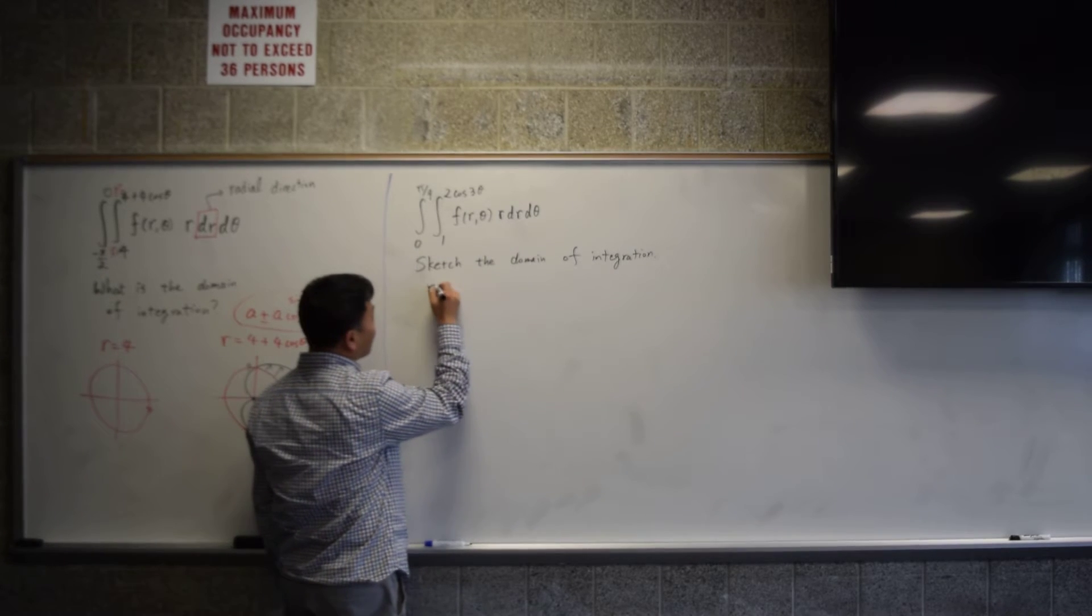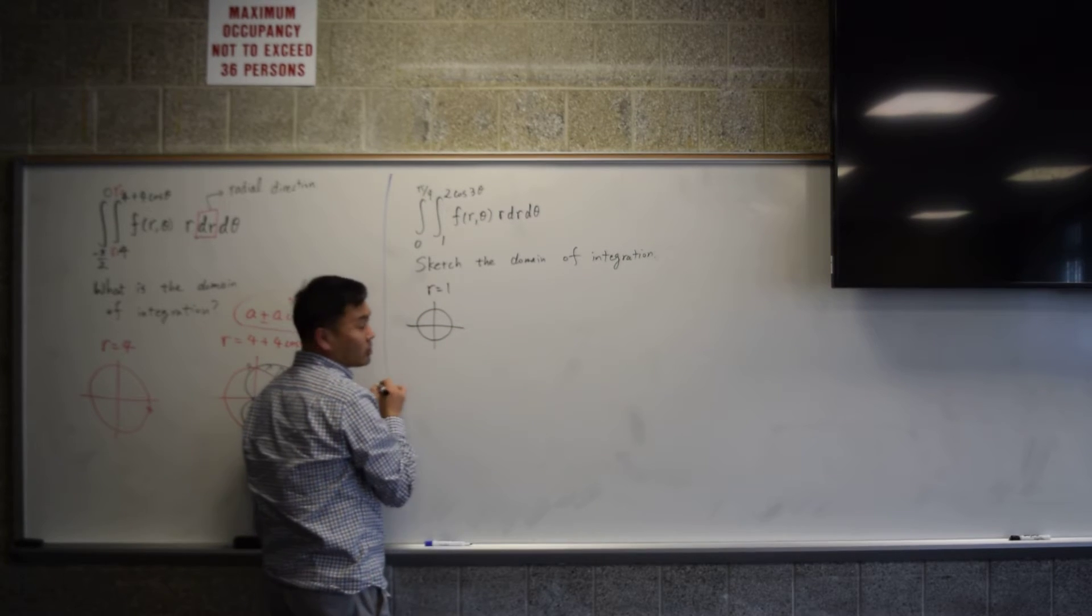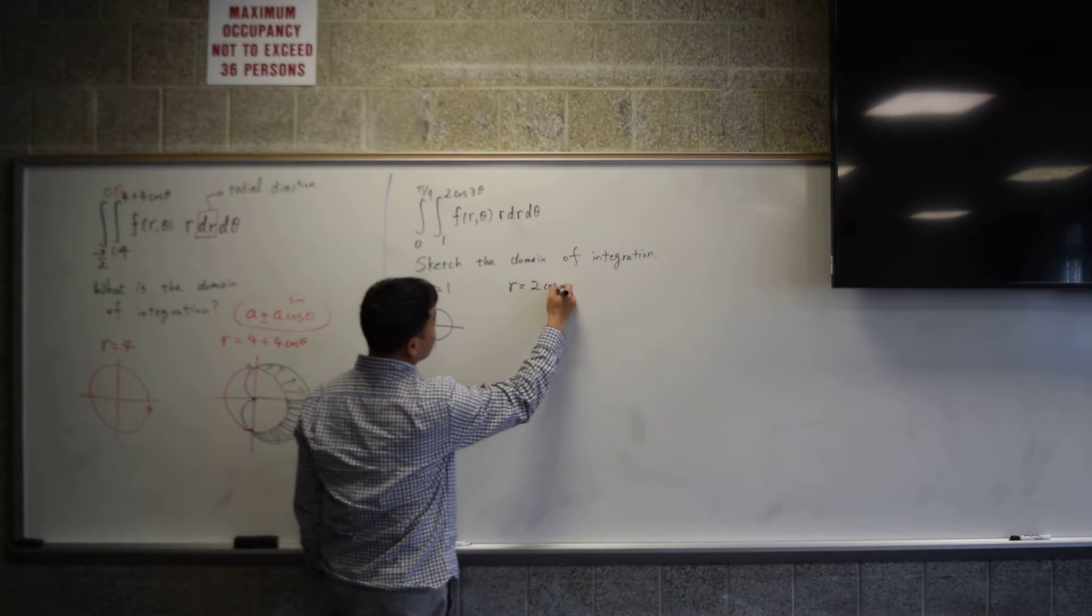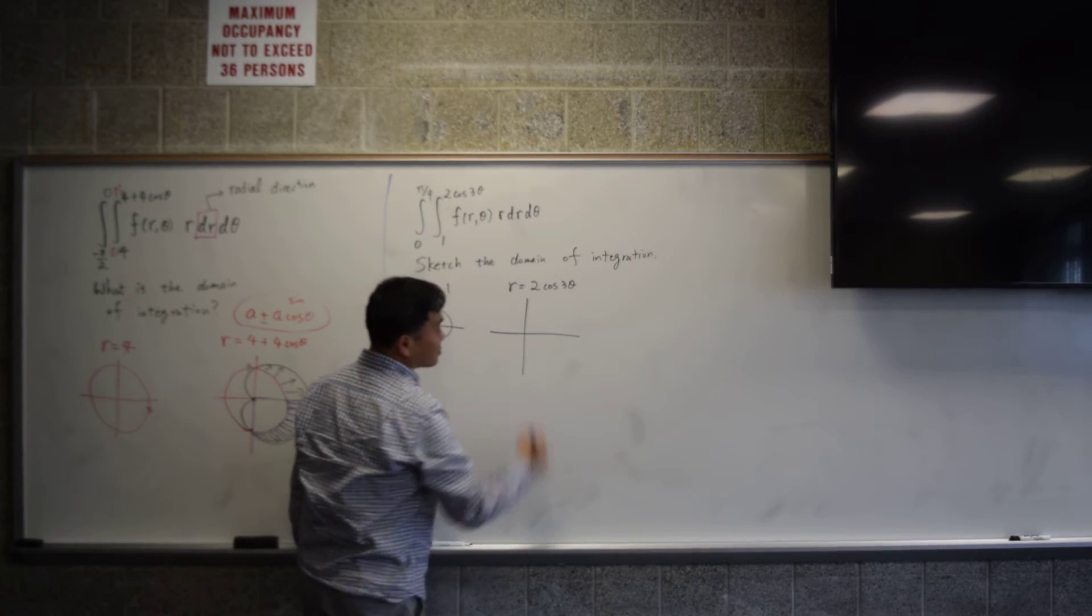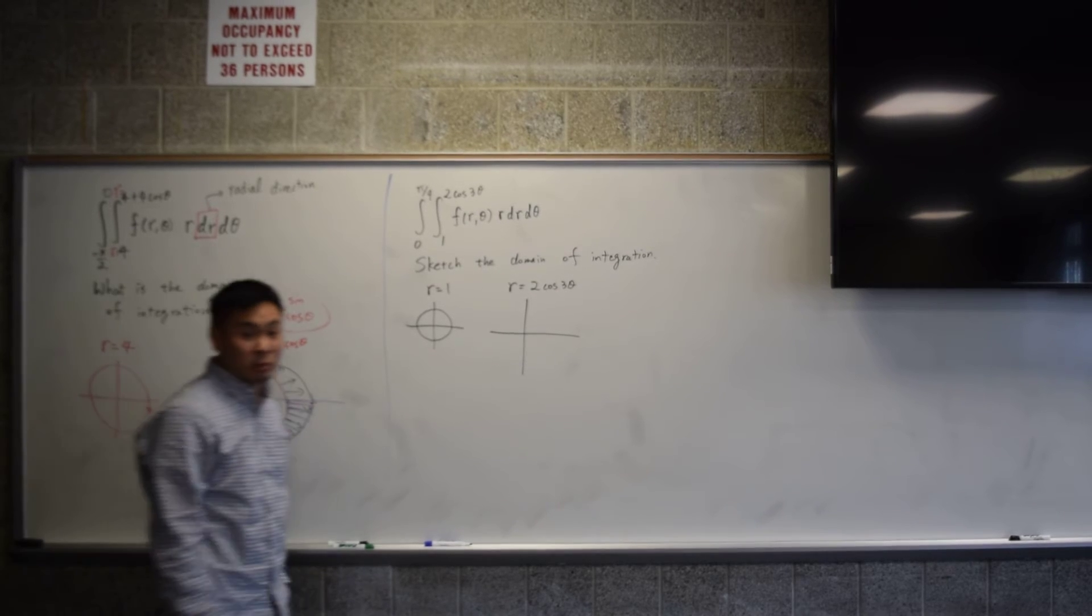Same deal. You think about r equal to one, which is the circle of radius one. And you think about r equals to two cosine three theta. What is this? Three petals. It's a rose with three petals, right?